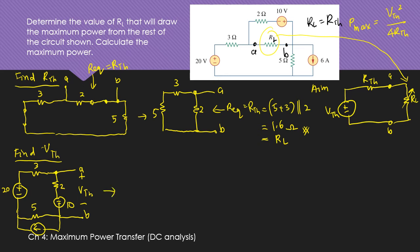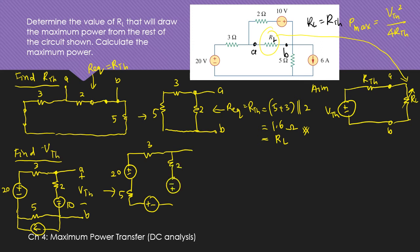Do a source transformation. You have 3 ohms, 20 volts in series, and 2 ohms with 10 ohms giving terminals A and B with VTH. The current source of 6 amperes in parallel with 5 ohms transforms to a voltage source of 6 times 5 equals 30 volts in series with 5 ohms.